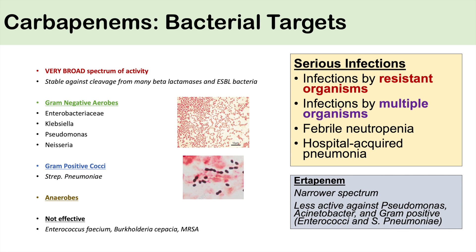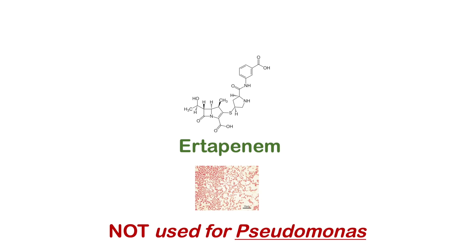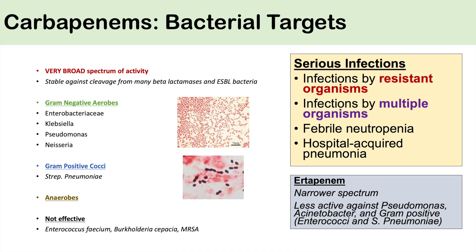Ertapenem is a newer carbapenem that has a narrower spectrum of activity. Sometimes we can switch from a very broad spectrum carbapenem to a more narrow spectrum carbapenem like ertapenem. Ertapenem has good spectrum of activity, but has less activity against Pseudomonas, Acinetobacter, and some gram-positives like enterococci and strep pneumoniae. Specifically, ertapenem has very little activity against Pseudomonas — so if you're really trying to cover Pseudomonas, don't use ertapenem; use another carbapenem. But if you're trying to narrow the spectrum of treatment and you're not worried about Pseudomonas, you can switch to ertapenem.